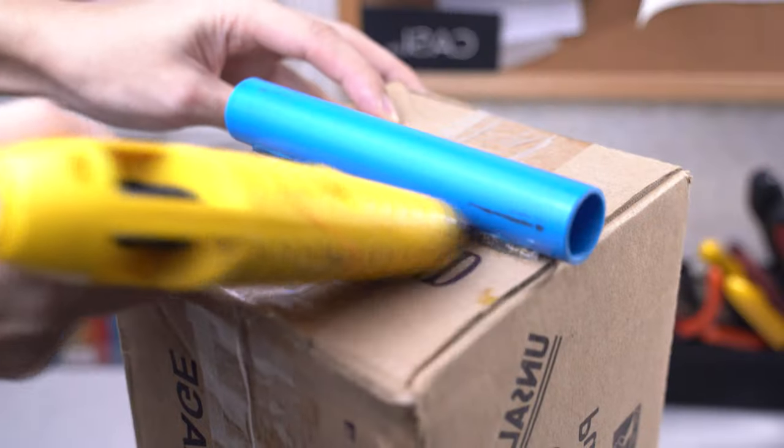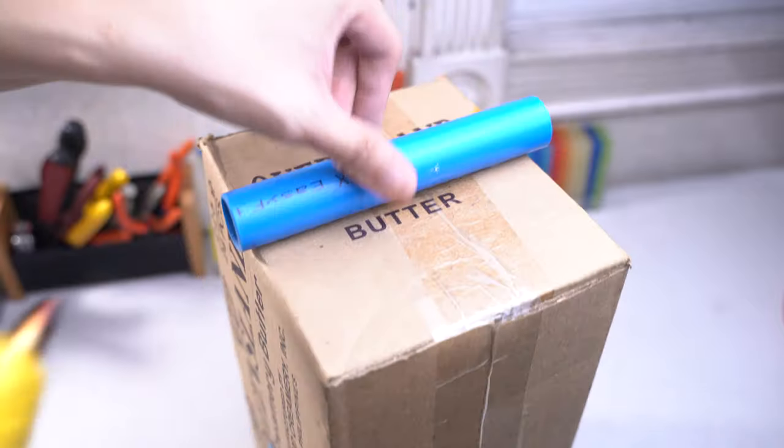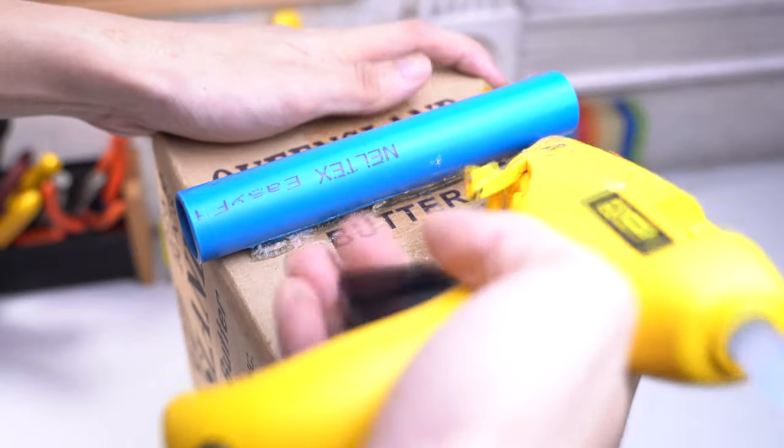Grab your other 1-inch pipe and carefully align it on top of your box. Then again, apply some hot glue on both sides to secure it in place.